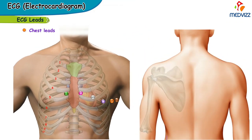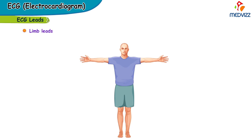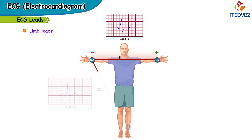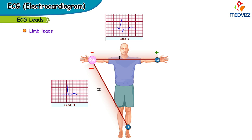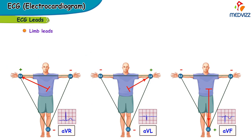In special circumstances, V7, V8, and V9 are also used. Now for the bipolar limb leads: Lead I records the potential difference between the right arm (negative electrode) and the left arm (positive electrode), so impulses traveling from right to left arm show a positive deflection. Lead II records the potential difference between the right arm (negative) and the left leg (positive). Lead III records the potential difference between the left arm (negative) and the left leg (positive). The right leg acts as a ground source.